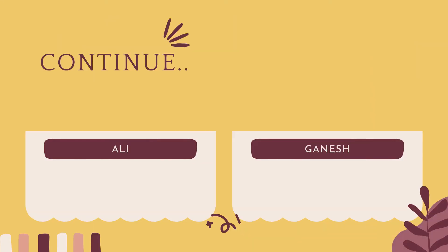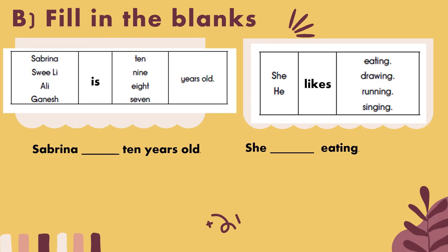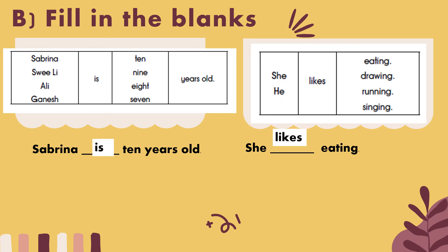So you continue — sambung dengan cerita Ali dan Ganesh. Next: fill in the blank. Isi tempat kosong berdasarkan jadual yang diberi. Number 1 — Sabrina... tempat kosong... 10 years old. The answer is 'is.' Salin sama je. Next: She likes — sambut kosong? Eating. Likes. She likes eating.